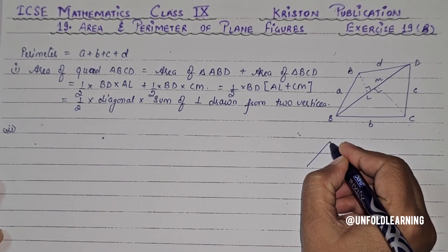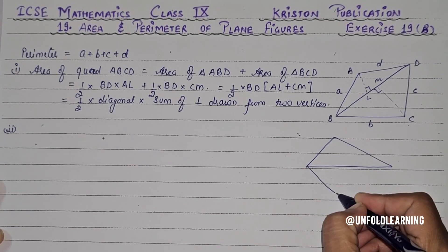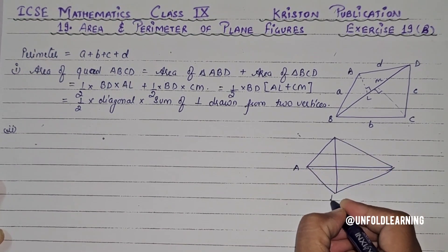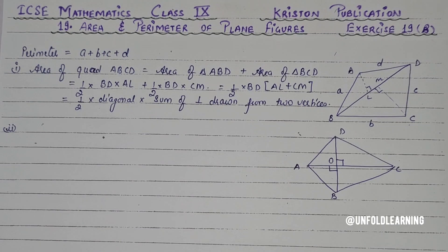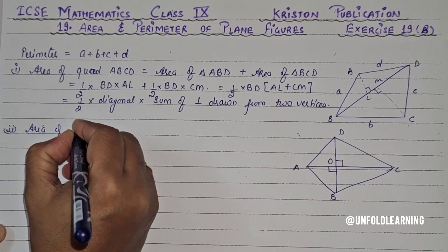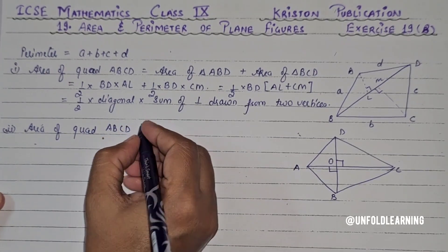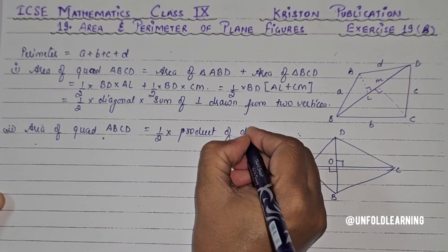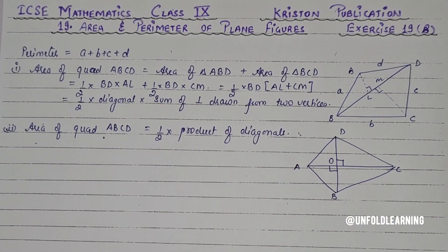The other formula applies when you have a quadrilateral ABCD where one diagonal is perpendicular to the other diagonal. In that case, the area of quadrilateral ABCD equals one-half times the product of the two diagonals.